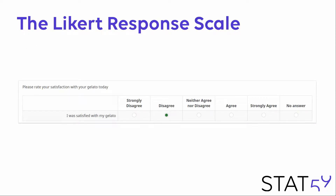Like many people, when I'm building my survey, I'm going to use the Likert response scale. The Likert response scale is a very simple response scale where you're asked to rate your agreement with a particular statement. In this case, the statement is: 'I was satisfied with my gelato.' Customers are asked to rate it on a scale of: strongly disagree, disagree, neither agree nor disagree, agree, or strongly agree. I start my experiment, serve my gelato, and have customers rate it on the Likert scale, then collect the data.